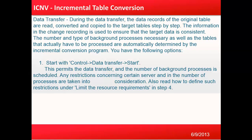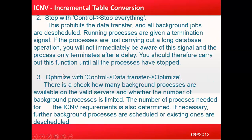You have the following options: Start — with Control > Data Transfer > Start, this permits the data transfer and schedules the required number of background processes. Any restrictions concerning certain servers and the number of processes are taken into consideration. Stop — with Control > Stop Everything, this prohibits the data transfer and all background jobs are stopped; running processes are given a termination signal.